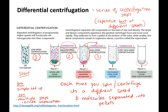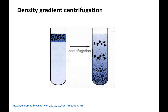We call it a crude separation — it gets rid of a lot of the junk. But if you were interested specifically in mitochondria, you might use the other technique called density gradient centrifugation to get more precise. I'm going to show you what that is in the next slide.